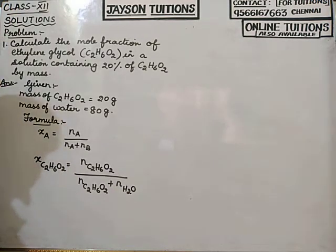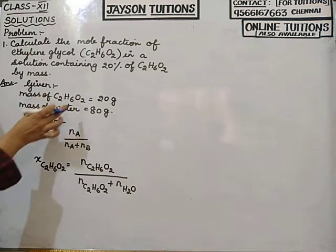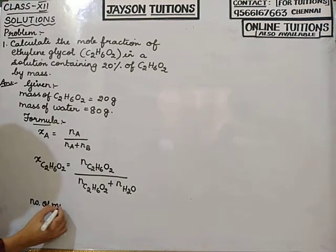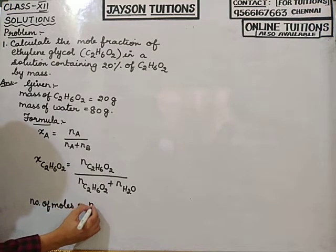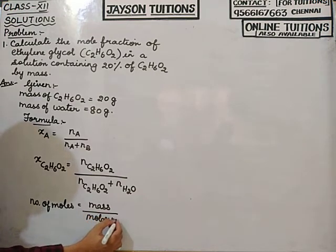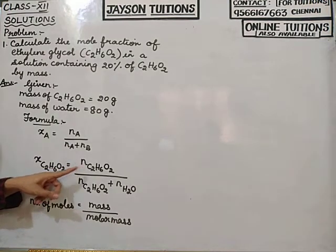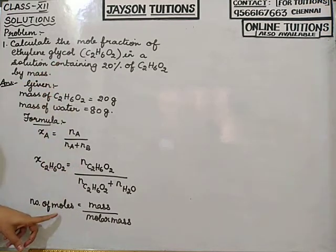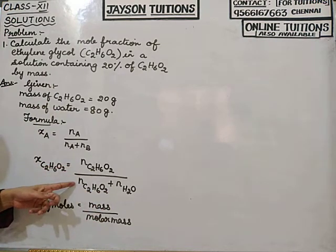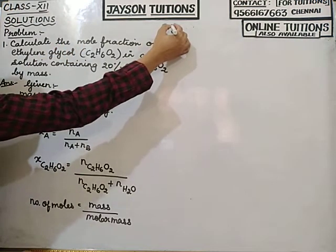The number of moles value is not given in the question — only mass is given. The formula for number of moles is: number of moles equals mass divided by molar mass. So I have to calculate number of moles of ethylene glycol and number of moles of water, then substitute in the mole fraction formula.